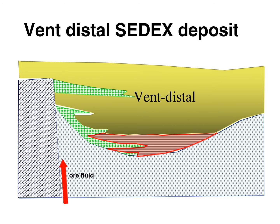In vent distal deposits the fluids tend to be more saline and lower temperature. The ore fluid goes up the fault and is vented onto the seafloor, but because the fluid is oxidized, any sulfur is present as sulfate. It doesn't mix well with ocean water, so it pools in topographic lows. Bacterial sulfate reduction then works on the sulfate within the fluid, depositing the metals in finely laminated layers. It's also possible these fluids move away from the fault zone within unconsolidated sediments and deposit ore that way, again through bacterial sulfate reduction.